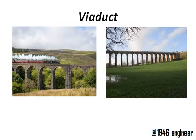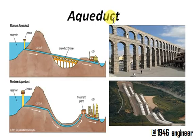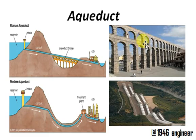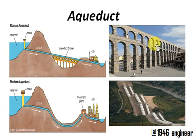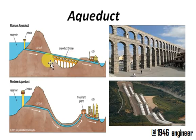Next we have the aqueduct. An aqueduct is a special case of a viaduct which provides passage of only water. This is a typical ancient Roman aqueduct — it carries water from one place to another, spanning across a valley.